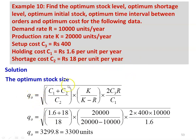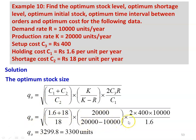Solution — Optimum stock level QO = √[(C1 + C2)/C2 × K/(K − R) × 2C3R/C1]. Substituting all numerical values: √[(1.6 + 18)/18 × 20,000/(20,000 − 10,000) × 2 × 400 × 10,000/1.6]. Calculating QO, the optimum stock level equals 3,299.8, which is approximately 3,300 units.